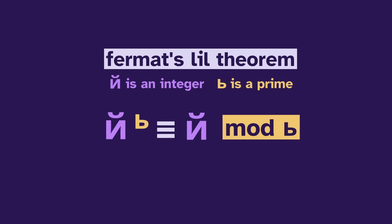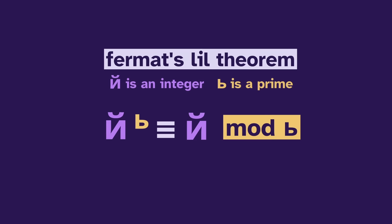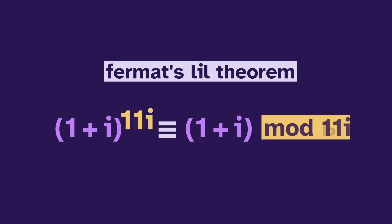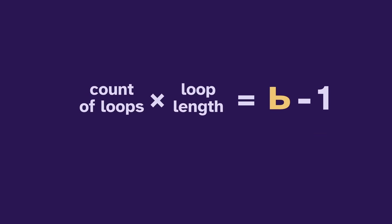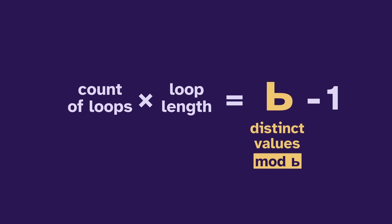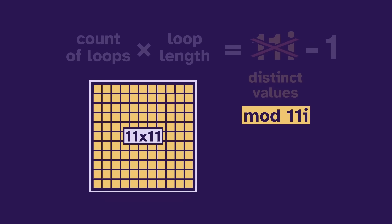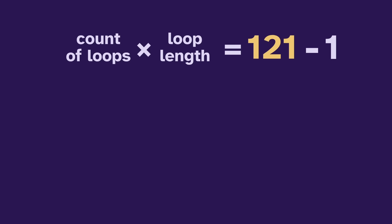But how does this work with complex integers? Our first example used 1 plus i mod 11i. How do we apply the complex exponent? We don't — that came from the earlier equation, where p was the count of distinct values mod p. That works for a natural prime, but we can't have 11i distinct values. Mod 11i splits the plane into 11 by 11 grids, so there are 121 distinct values. And therefore, the count of loops times the loop length must be 120.